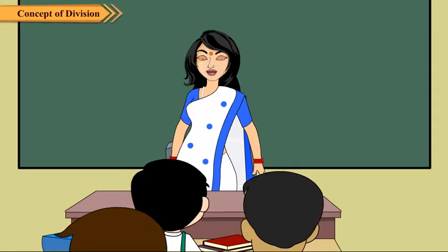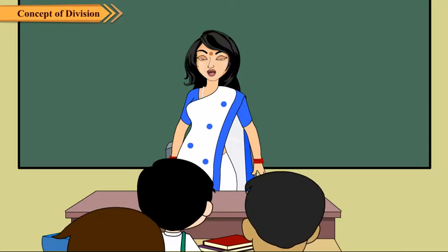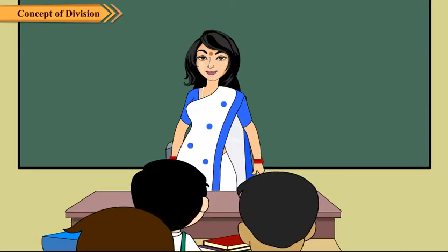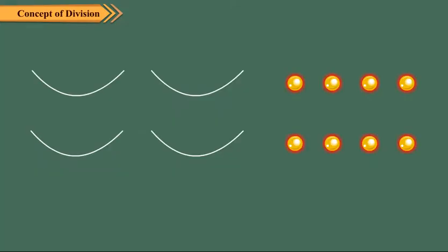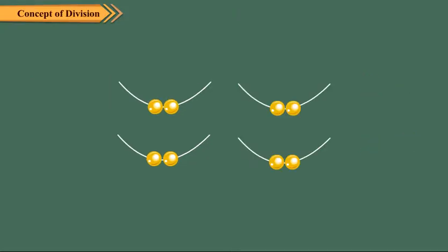First we take an example of equal sharing. Eight beads have to be put equally in four strings. How many beads on each string can you have? First we put one bead on each string. Now we have remaining four beads. So we put one more bead in each string.